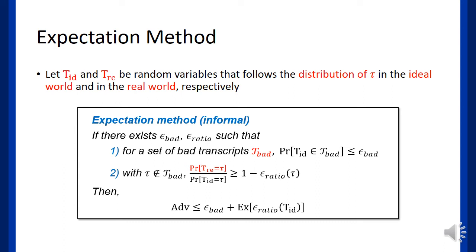I will not cover this precisely, but the important part is to define a proper set of bad transcripts, and then find out the corresponding epsilon_ratio. Also, the probability of getting a good transcript in the real world is the most challenging part in the proof.